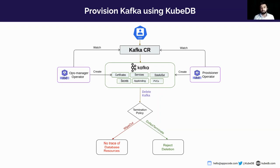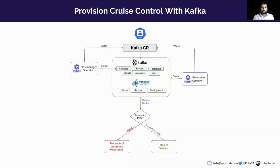In our upcoming release, we are adding support for Cruise Control. The provisioner operator will also create Cruise Control if you enable it from the Kafka manifest YAML. Prior to installing Cruise Control, it will install the necessary configuration secrets, authentication secrets, services, headless services, and deployments. Within the deployment, not only will the Kafka Cruise Control backend be deployed, but also the Cruise Control UI frontend, which is embedded into the backend. This can later be accessed via port-forwarding through your browser or any other gateway using the headless service.